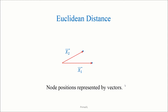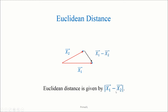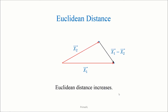Suppose that we have two nodes. The node positions are represented by the vectors x1 and x2. The difference between two vectors is another vector, as we can see here. So, the Euclidean distance is the magnitude of x1 minus x2. If the magnitudes of the vectors x1 and x2 increase, the Euclidean distance also increases. It seems that the Euclidean distance really measures how close the nodes are.